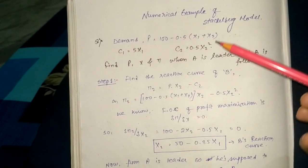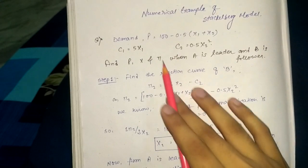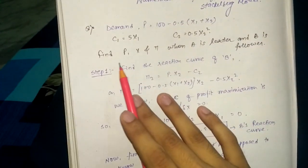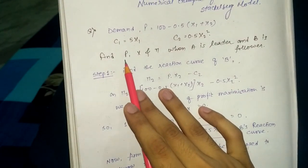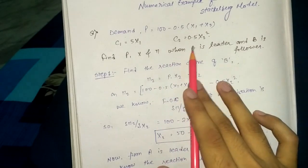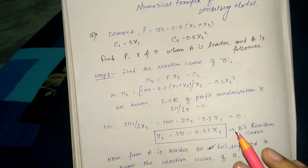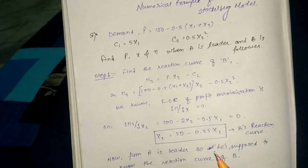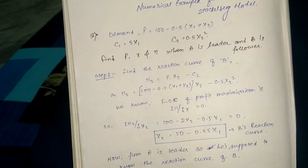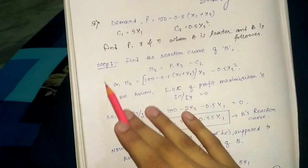The question given here has the demand and cost functions. We are asked to find out the value of P, which is price, X is output, and pi is profit when A is leader and B is follower. When A is leader, then A wants to maximize his profit given the reaction curve of firm B, as I discussed earlier in my Stackelberg model video.